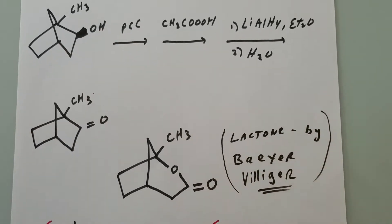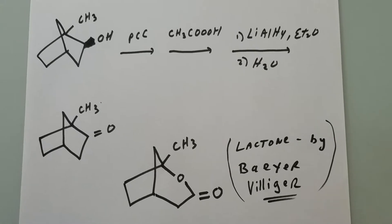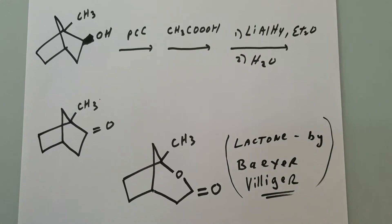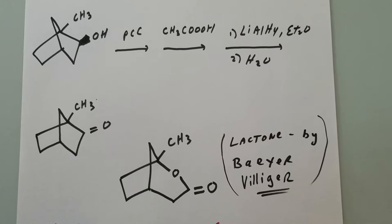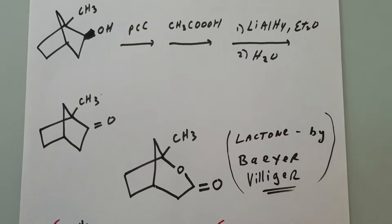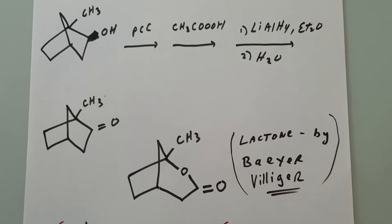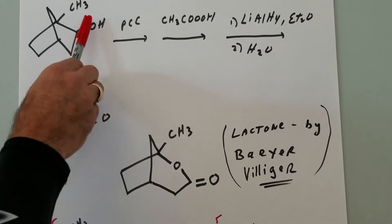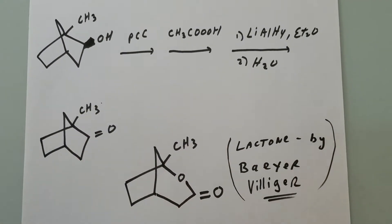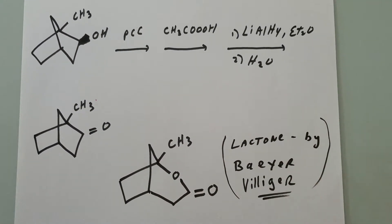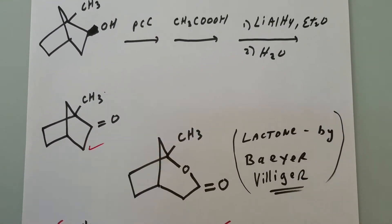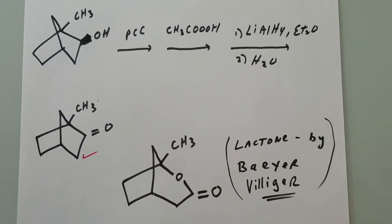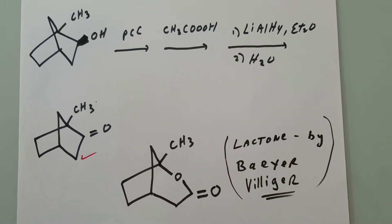First thing, it starts off pretty easy. You have PCC. PCC, or a reaction such as Swern oxidation or Dess-Martin, they all do the same thing, and they're going to cause an alcohol to go to a ketone. So I think everybody can at least see how part A was got. That one's easy.